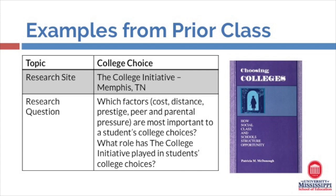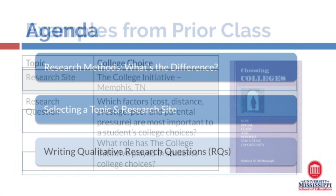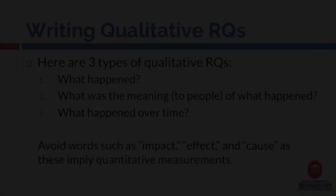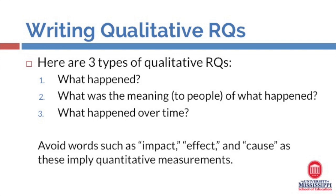Finally, let's review some criteria for writing qualitative research questions. Here are three types of qualitative research questions: questions that answer, first, what happened? Second, what was the meaning to people of what happened? And third, what happened over time? Here we avoid such words as impact, effect, and cause as they imply quantitative measurements.